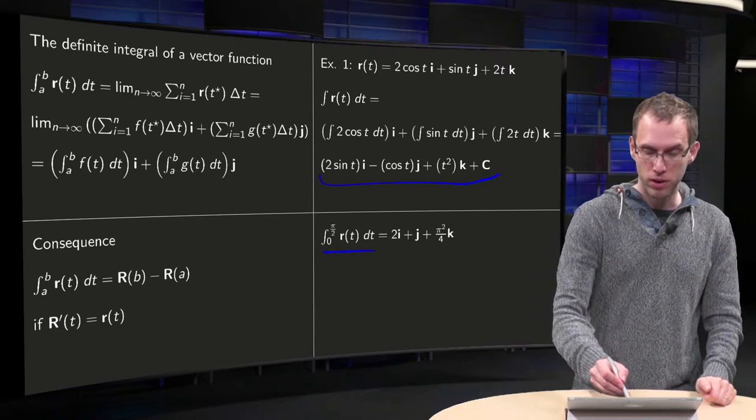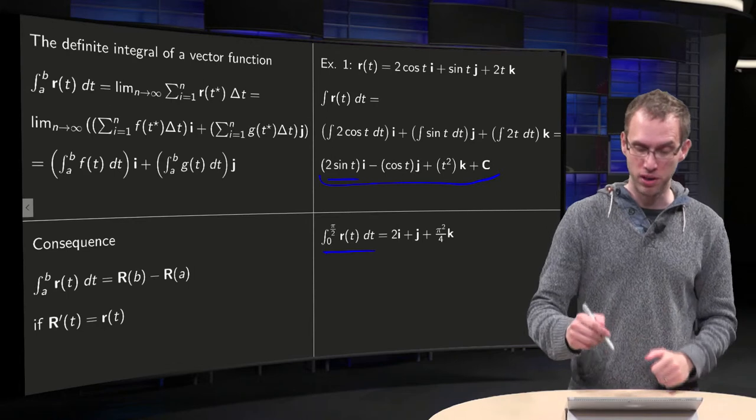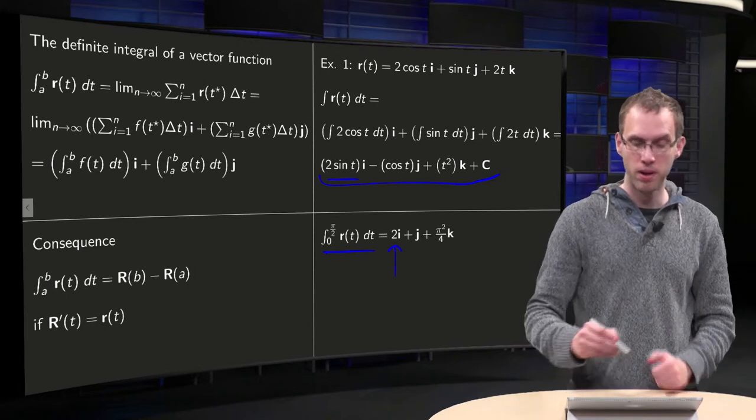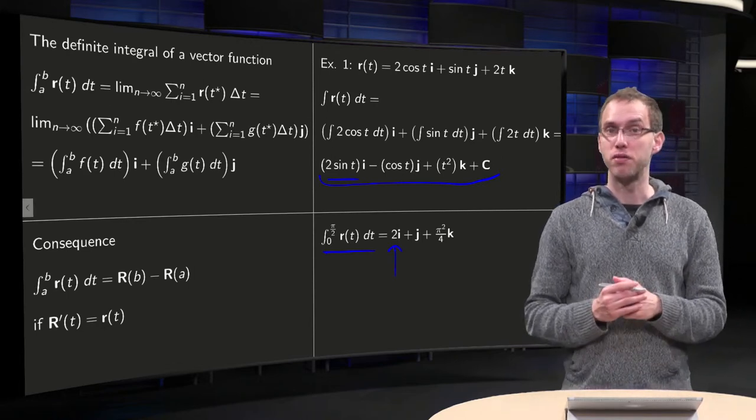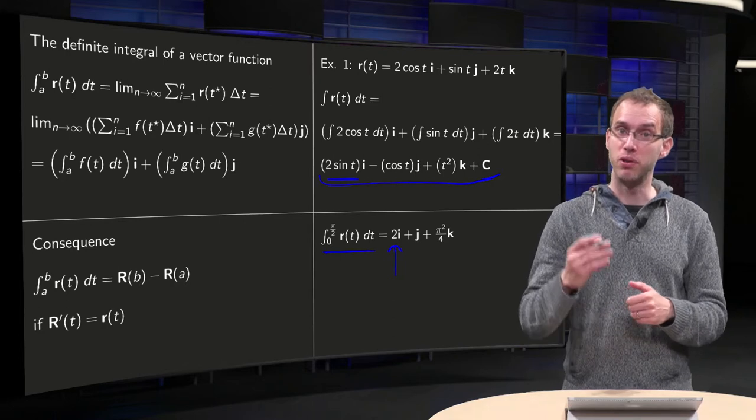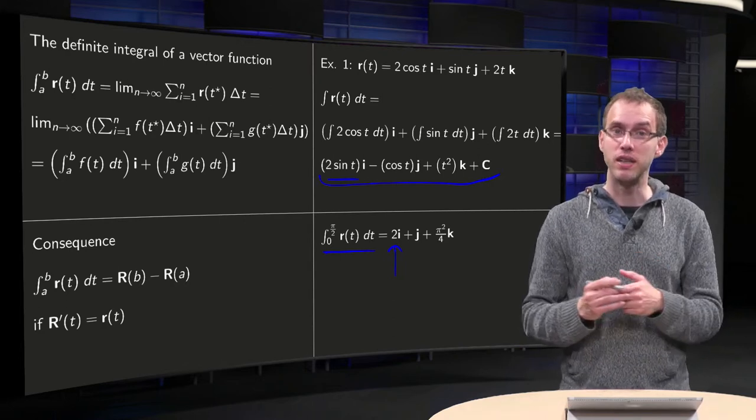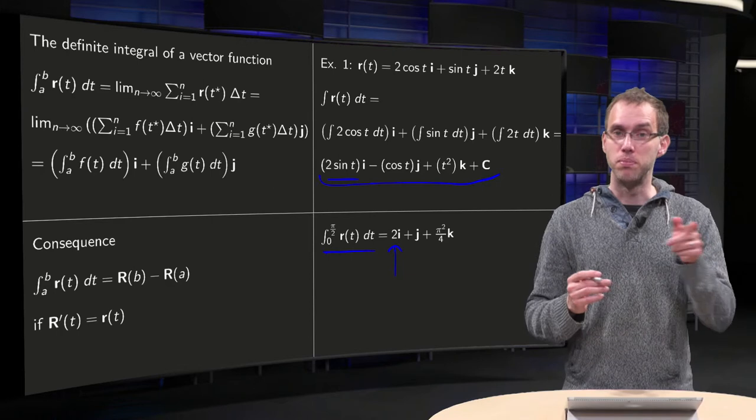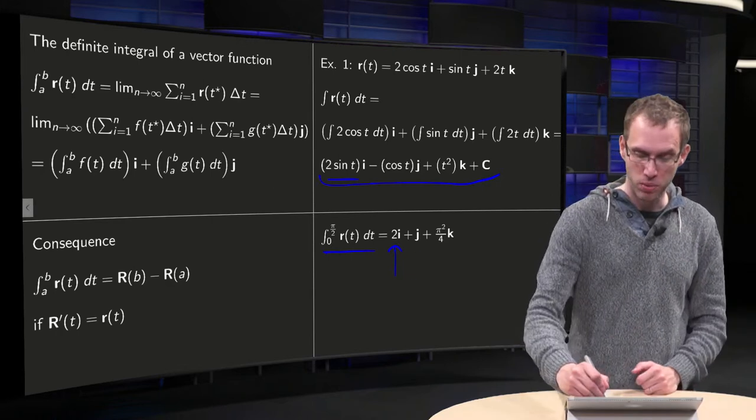So you have 2 times sine of π/2 equals 2, minus 2 times the sine of 0, which remains 2. And then the cosine of π/2 equals 0, so you have only the lower boundary minus the cosine of 0, so you get 1 times j.